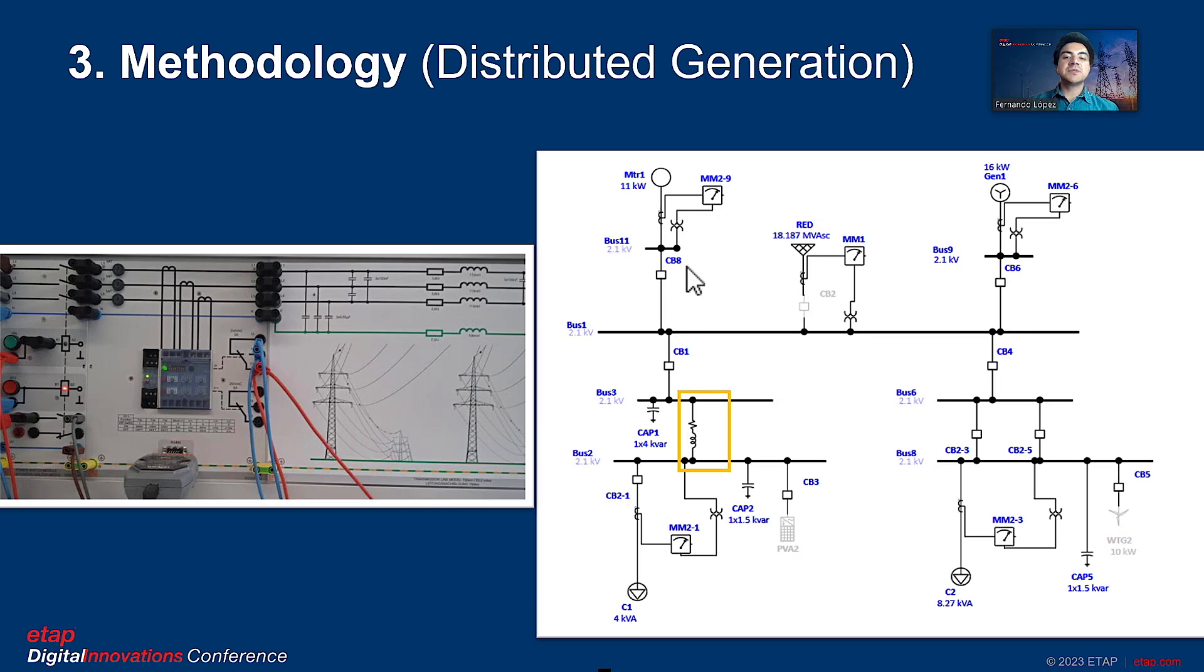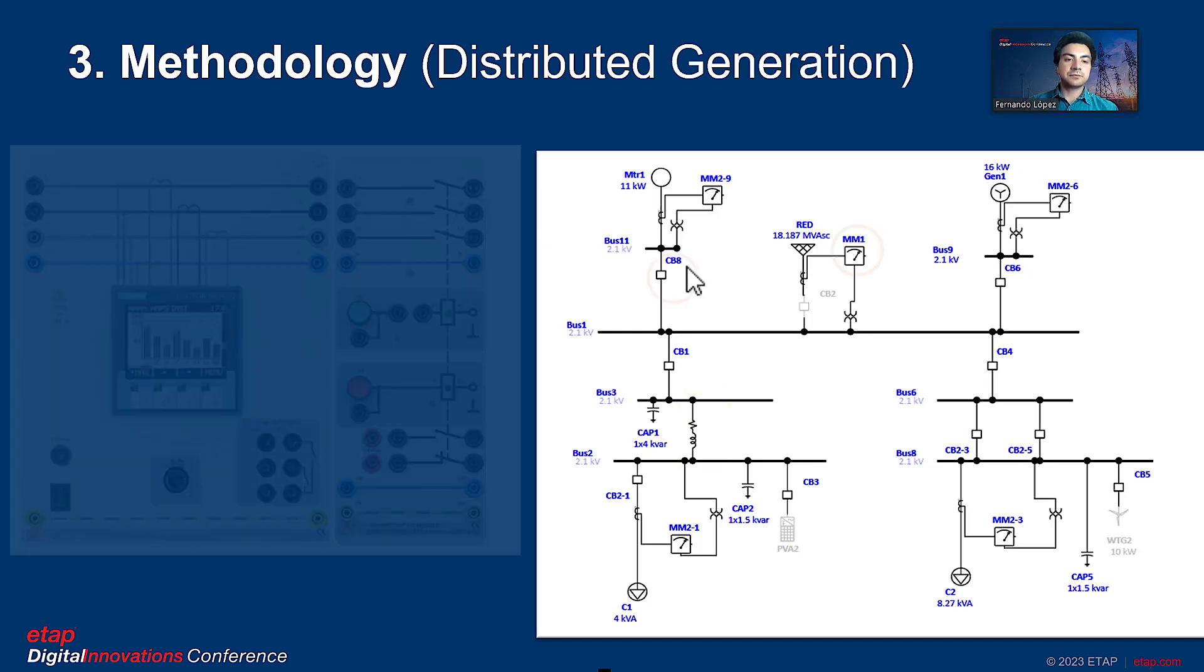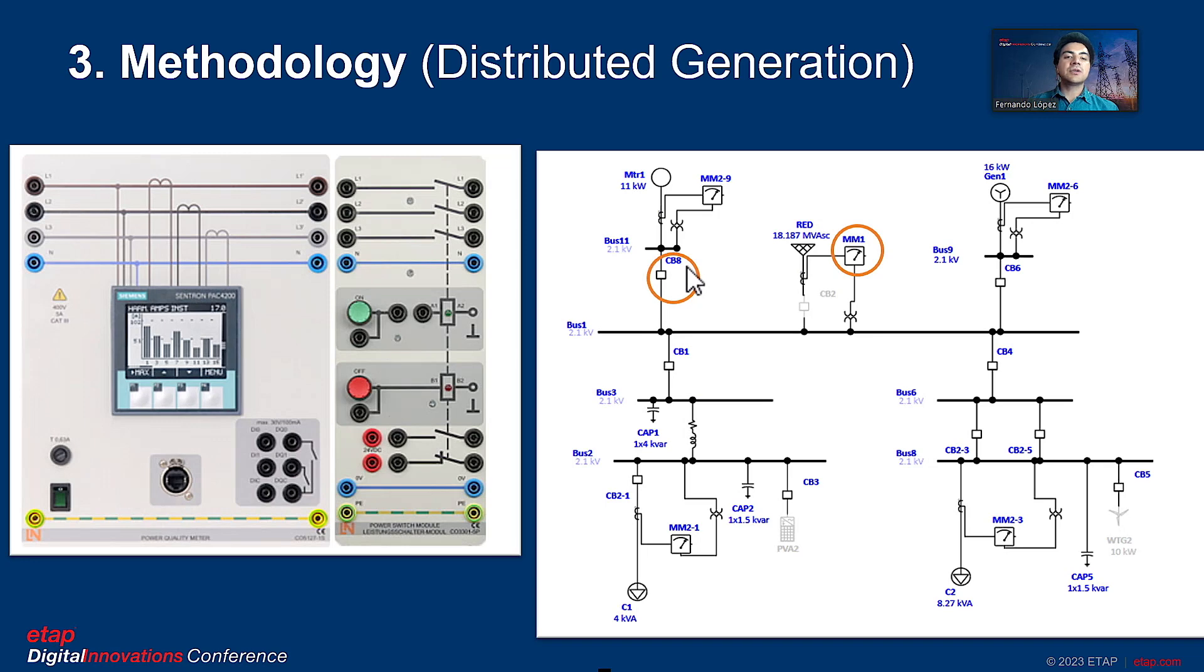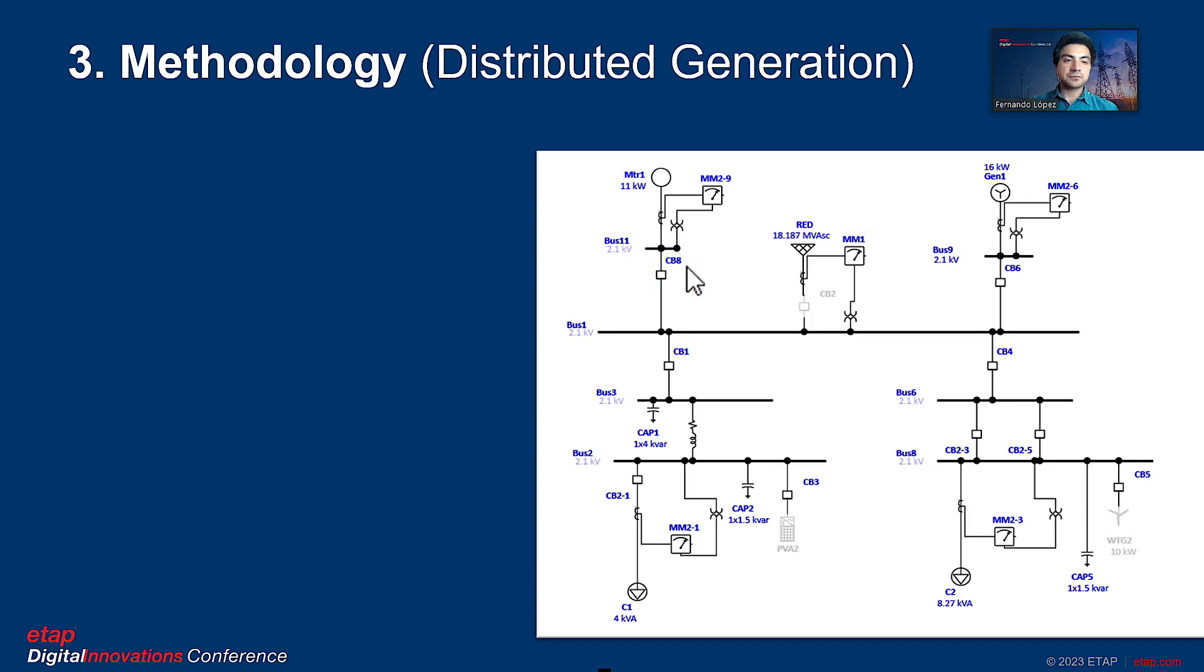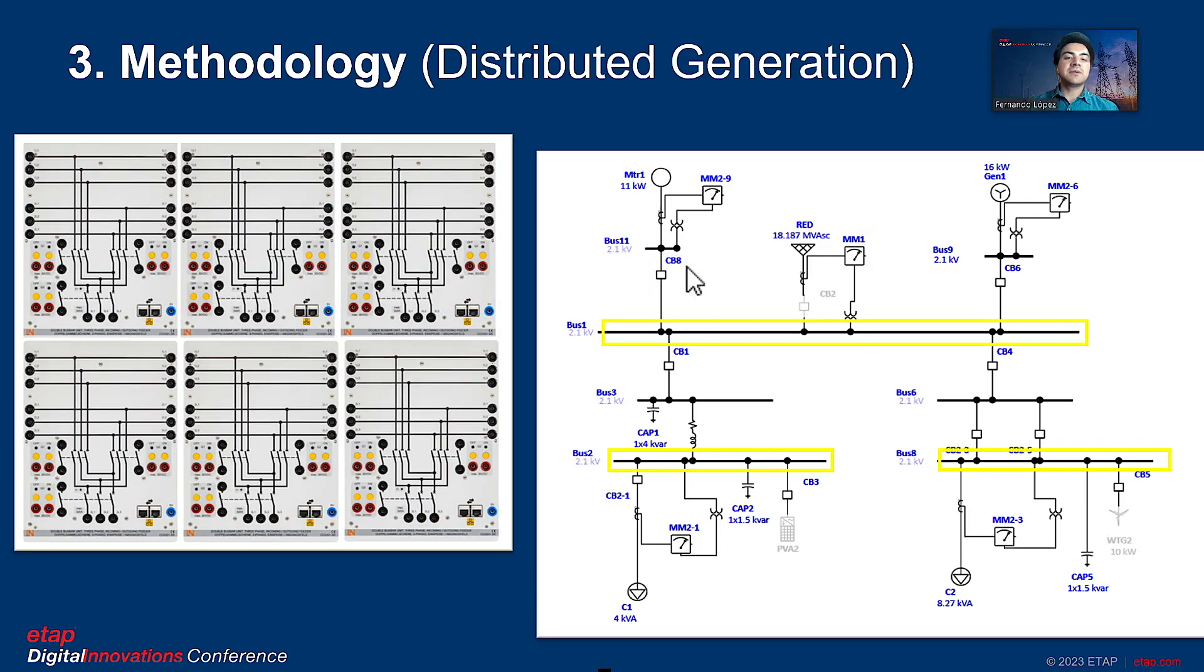The transmission line consists of a 150 km line and an overcurrent relay. The circuit breakers are represented by the Siemens Central Park 4200 meters.